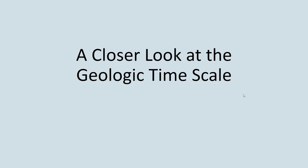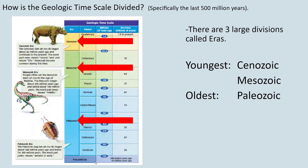Let's take a closer look at this time scale so you can read it intelligently. For eighth grade, we're really just going to focus on the last 500 million years. You could take a paleontology class in college where you really study the Precambrian — that time from about 500 million years ago to the start of Earth — but for our purposes we'll focus on these last 500 million years.